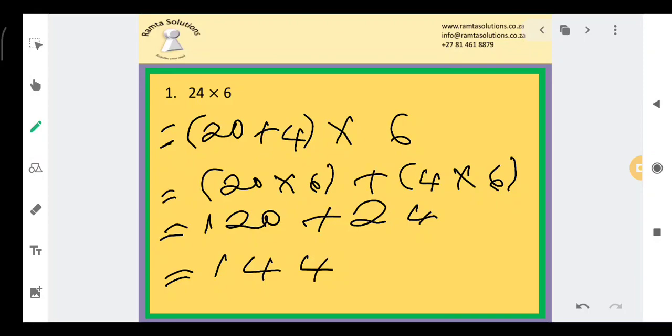If you are not sure, please confirm it on your calculator. This is how you do it. Remember, you're breaking up the most complex. In this case, 24 is the most complex, and 6 you can leave it like that.